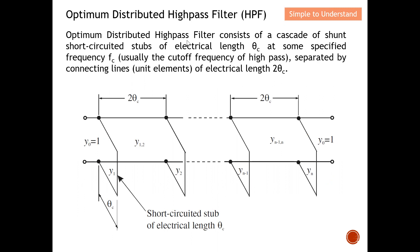This optimum distributed high pass filter mainly consists of two parts. One will be the cascade of shunt short circuit stubs. This is what we call the shunt short circuit stub — on one side it is short-circuited to the ground. They have an electrical length, denoted here, at some specific frequency fc, which is usually the cutoff frequency of the high pass filter. In the next few slides I'm going to discuss what the cutoff frequency of a high pass filter actually is.